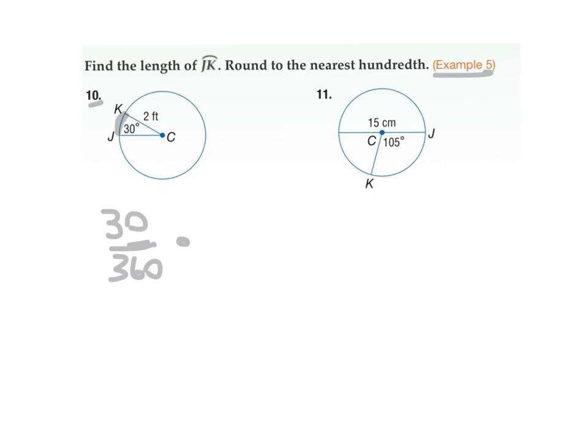Well, you know that the radius is 2. So it's going to be 4 pi times 30 over 360. And eventually you will come up with an answer of 1.05. It's to the nearest hundredth and it's feet. So your answer should be feet also.